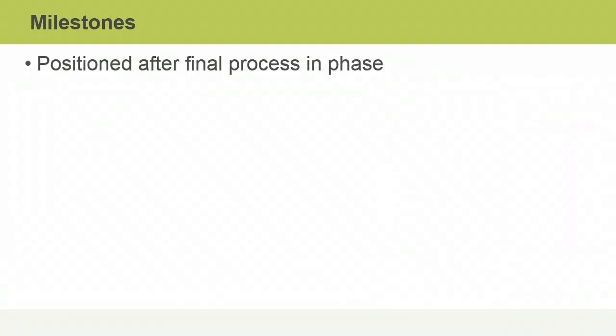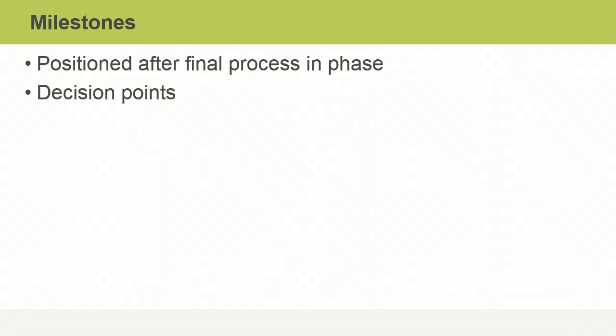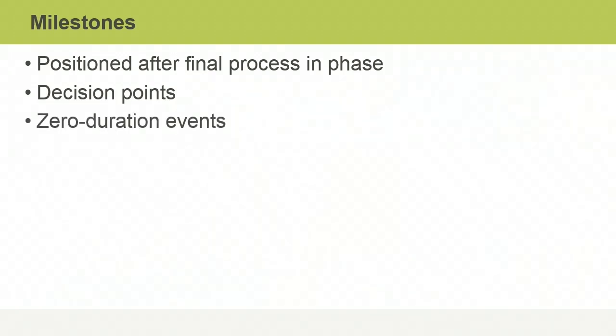Milestones are critical points in the project schedule that can be used as checkpoints to determine if project goals are being achieved. They typically occur after a final process in a phase or project. They can also be points where decisions are made about the future direction of the project. Milestones are not activities in themselves and they don't have durations. Sometimes they are called zero duration events.